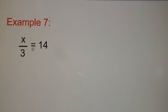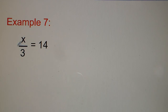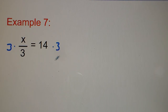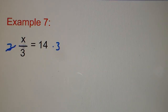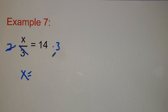Number seven: x divided by 3 equals 14. The opposite of dividing is multiplying, so we multiply both sides by 3. The times 3 and divide by 3 cancel out, so x equals 14 times 3, which is 42.